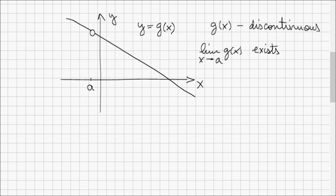because the limits exist. The limit from the left exists, the limit from the right exists, but the function g(x) doesn't have any value when x equals a.